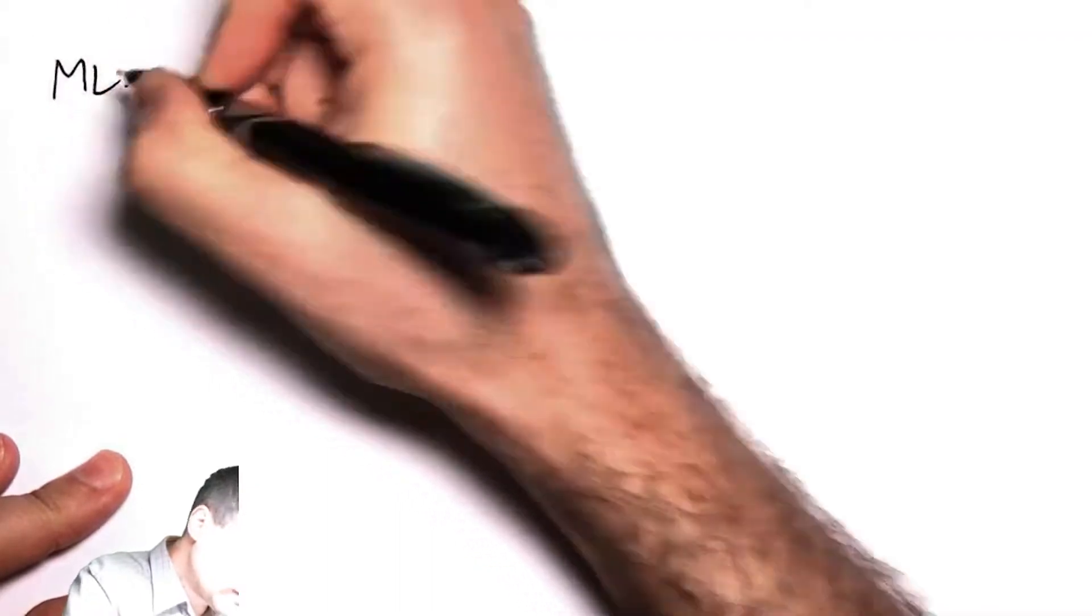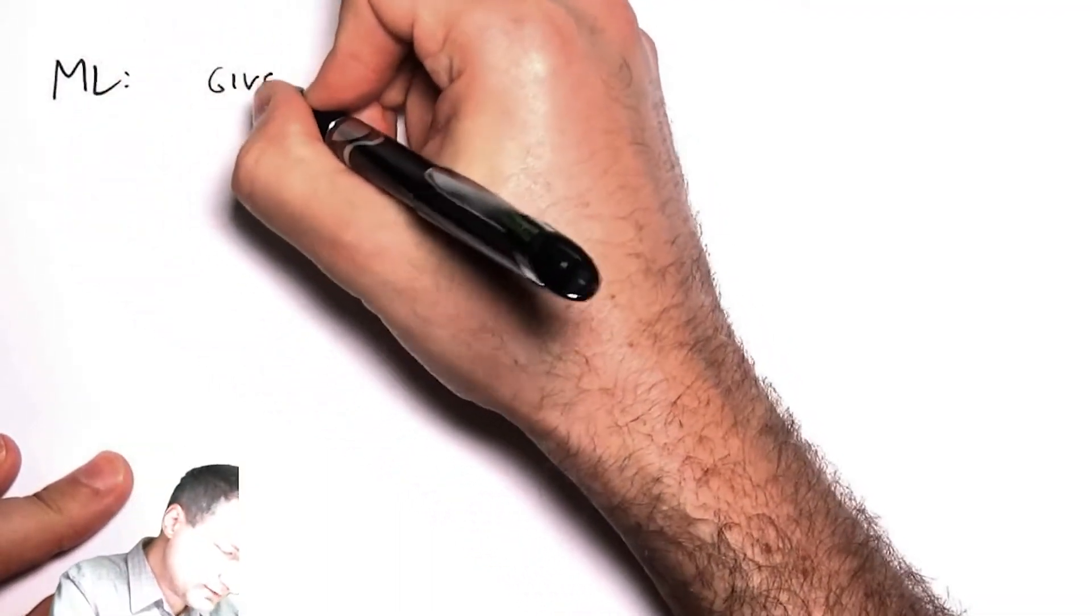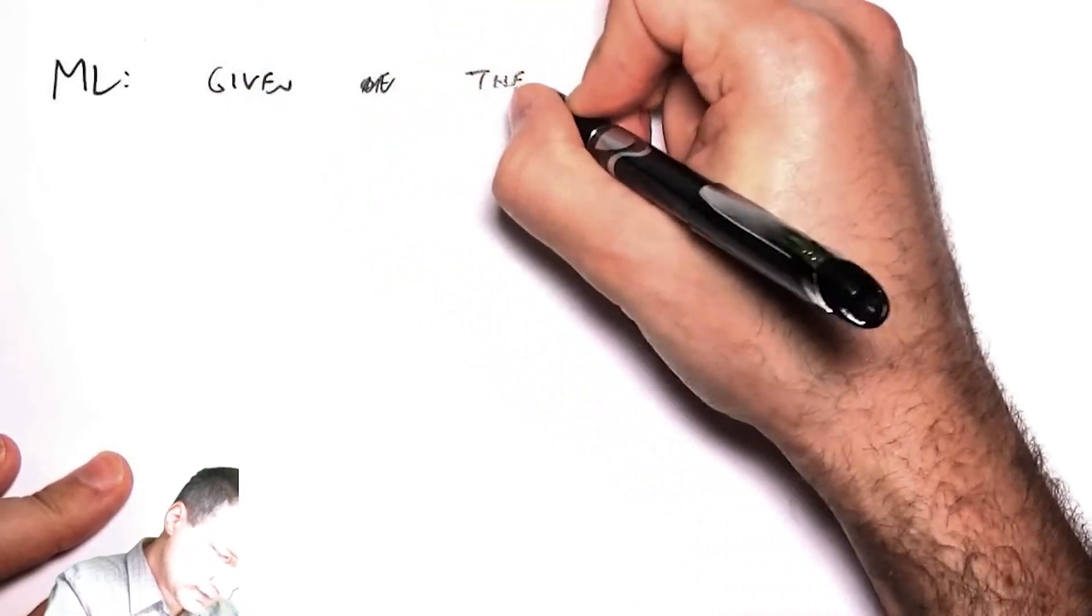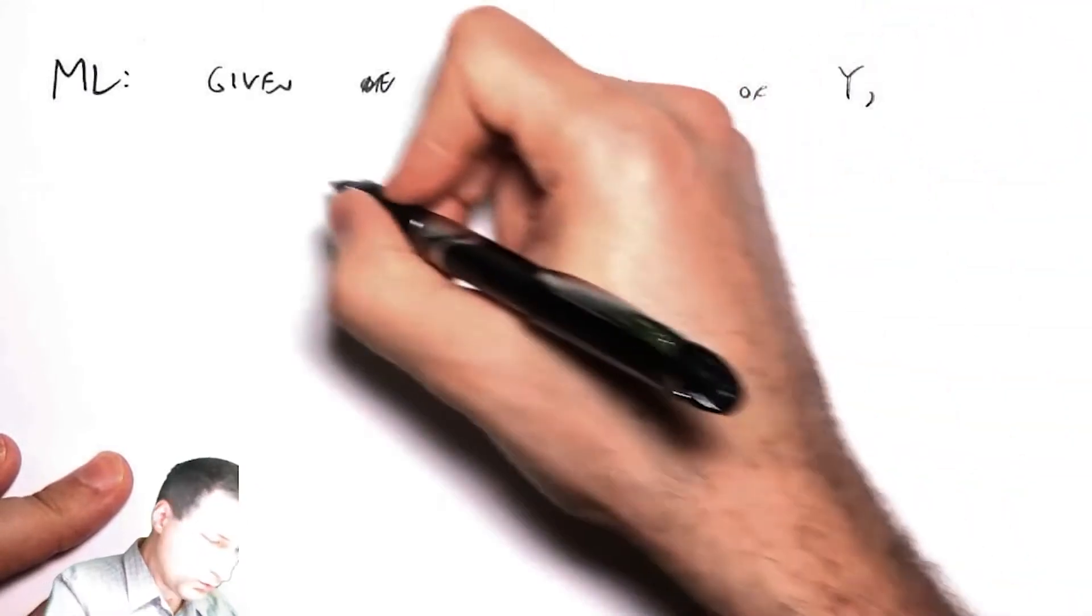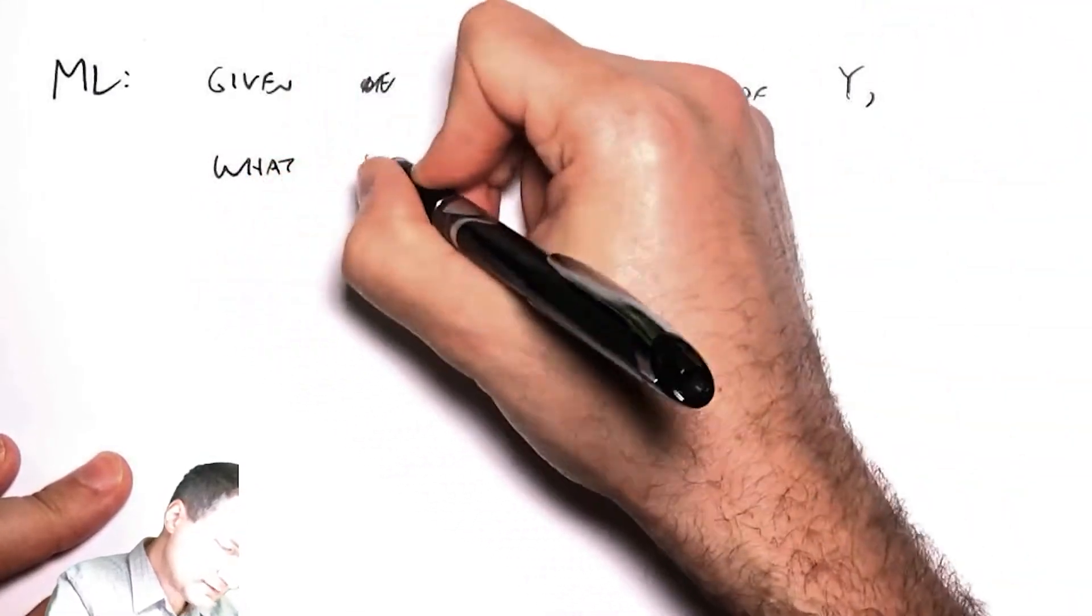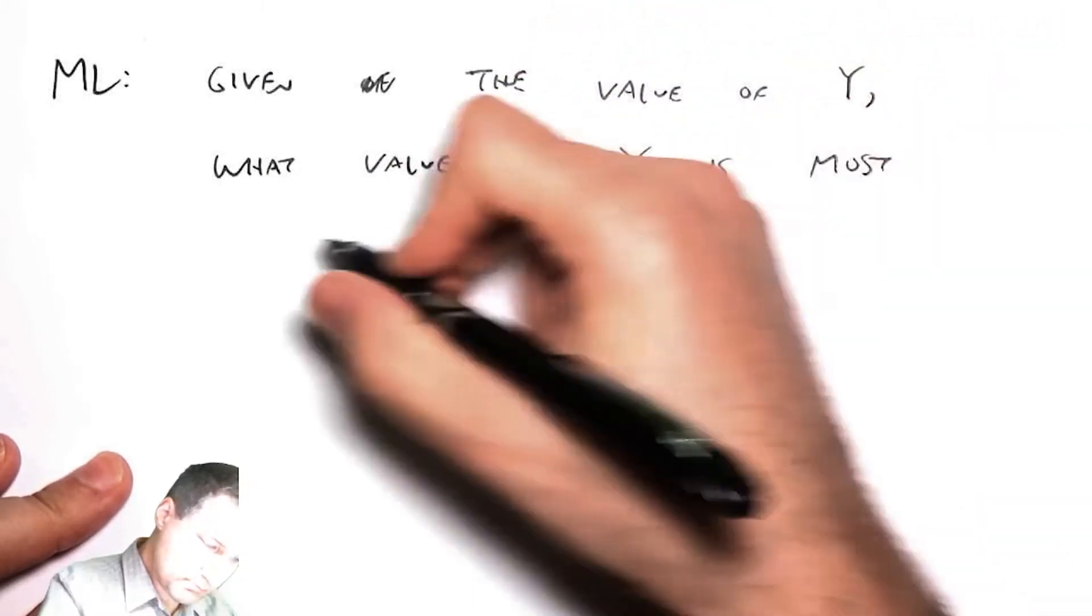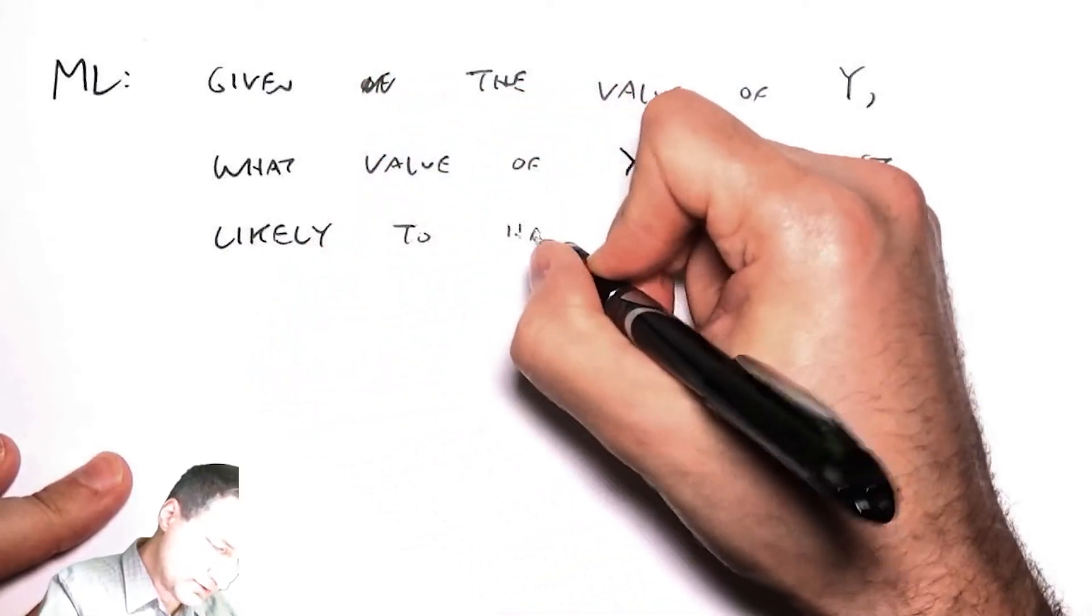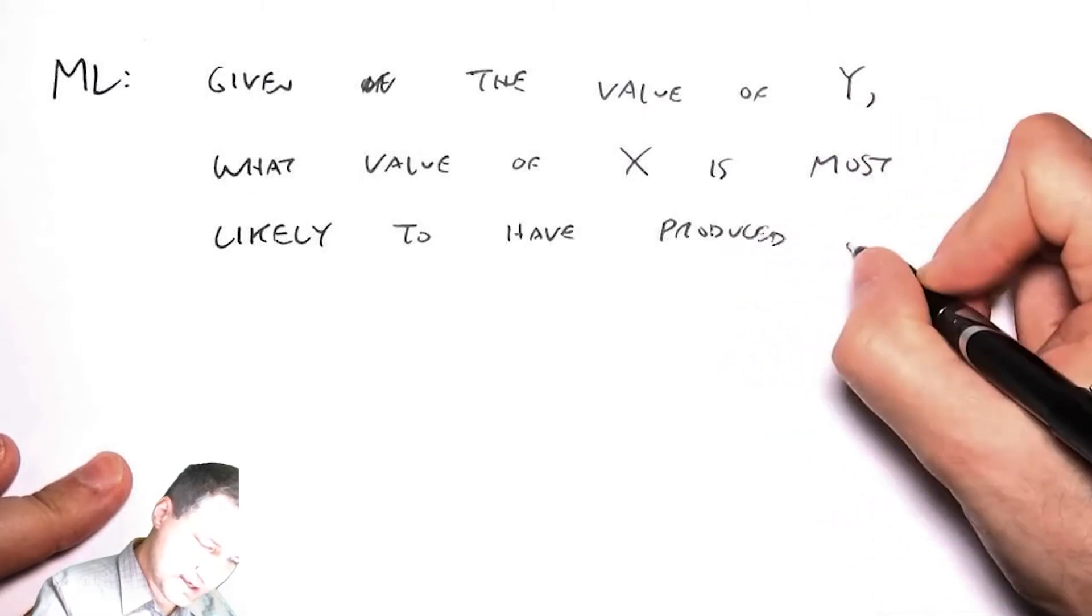And this is something that is usually easier to get in the real world. The idea behind maximum likelihood estimation is: given the value of y, what value of x is most likely to have produced it?